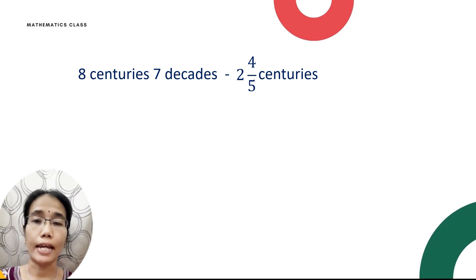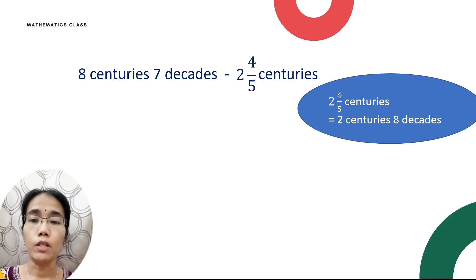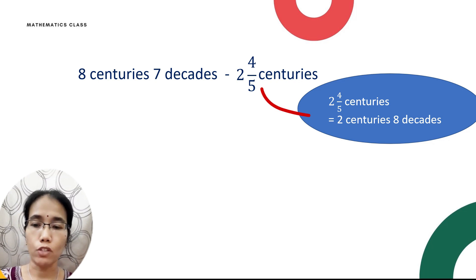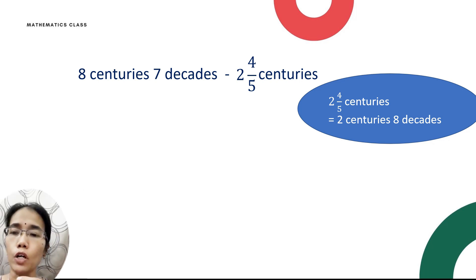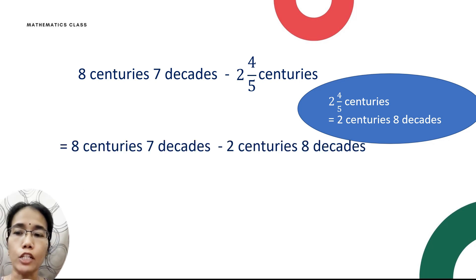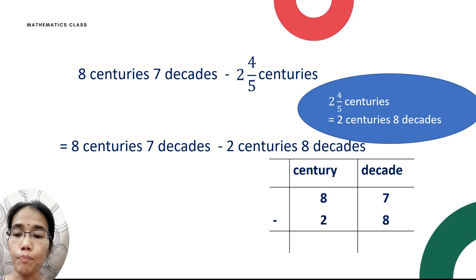The next example: eight centuries seven decades minus two and four-fifths centuries. First convert the fraction of time — two and four-fifths centuries converts to two centuries and eight decades. Now you'll have eight centuries seven decades minus two centuries eight decades. Do a T-line and look at the decades.